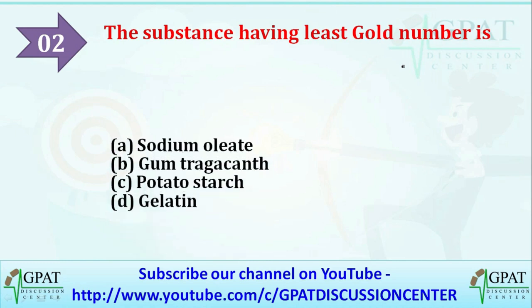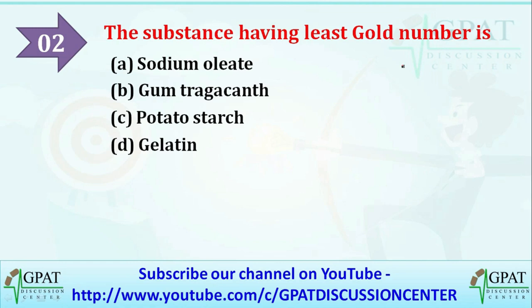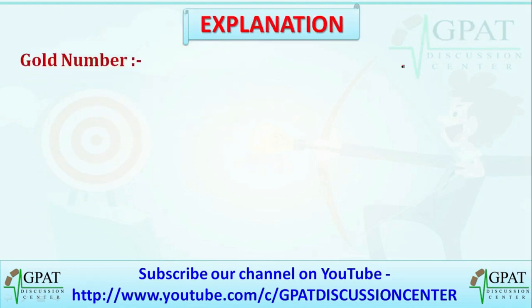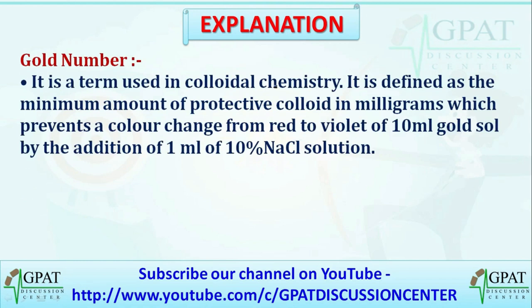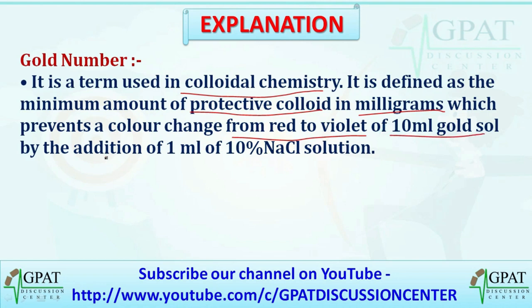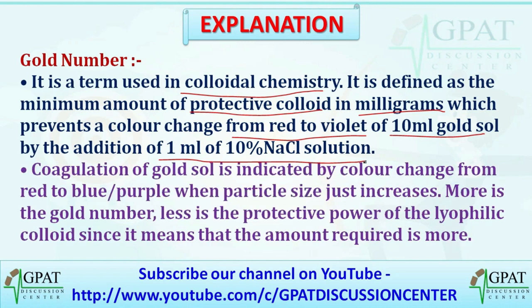The next question is: the substance having the least gold number — options are sodium oleate, gum tragacanth, potato starch, or gelatin. The correct answer is gelatin. Gold number is a term used in colloidal chemistry, defined as the minimum amount of protective colloid in milligrams which prevents a color change from red to violet of 10 ml gold solution by the addition of 1 ml of 10% NaCl solution.